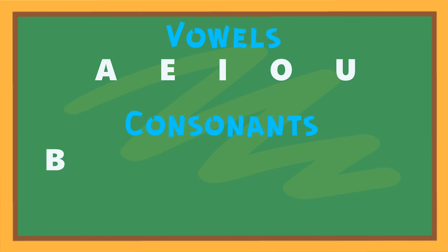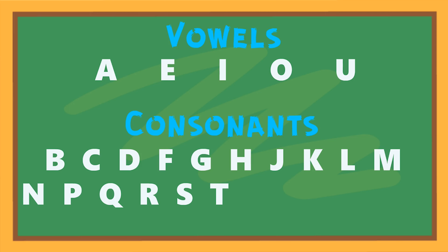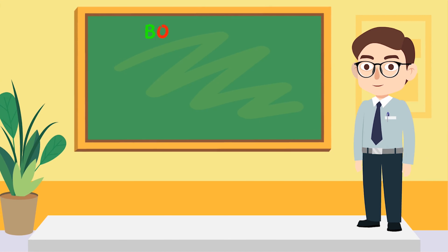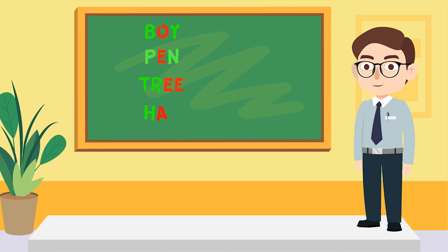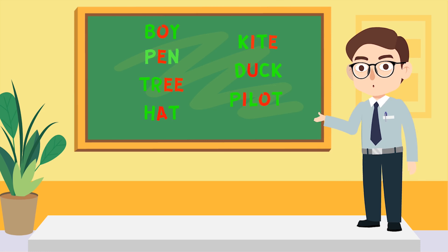Consonants: B C D F G H J K L M N P Q R S T V W X Y Z. Read aloud: Boy, Pen, Tree, Hat, Kite, Duck, Pilot. The letters in red are the vowels and the letters in green are consonants.